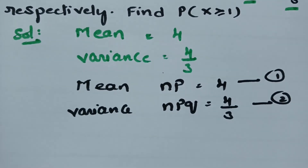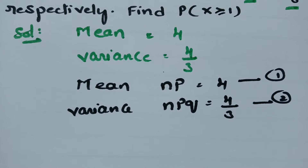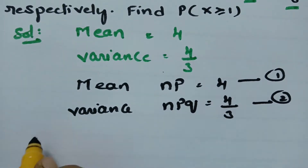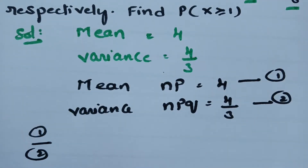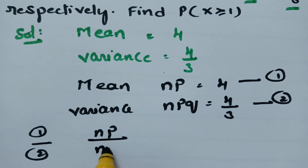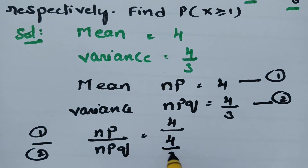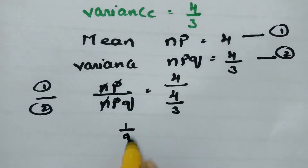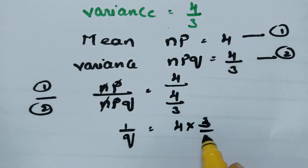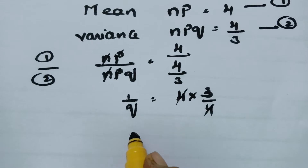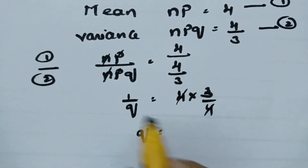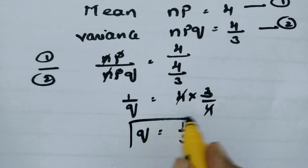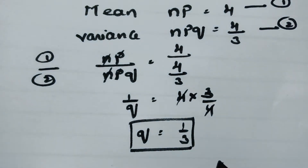For binomial distribution we need the values of p, q, and n. Now I am going to divide equation 1 by equation 2: np divided by npq equals 4 divided by 4/3. Cancelling np, we get 1/q = 4 × 3/4 = 3. So q = 1/3.